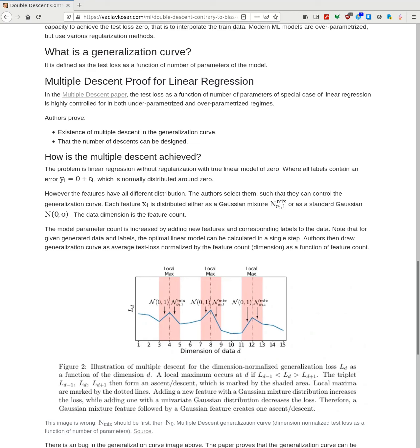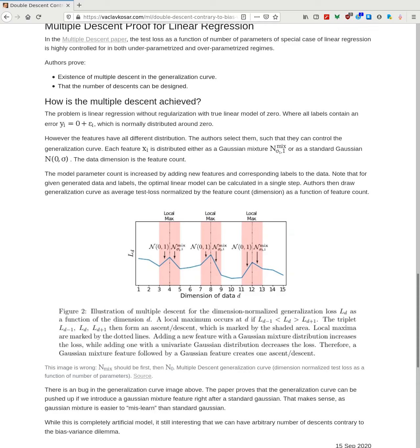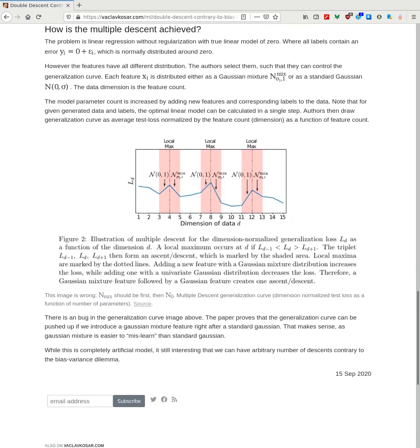What is generalization curve? That is defined as a test loss as a function of a number of parameters. There's this paper multiple descent proof for linear regression, which shows that they can control the generalization curve exactly and they can achieve multiple descent and achieve multiple minima. And how do they do this? So again, they use linear regression without regularization, but in this case they use true linear model of zero. So the labels don't depend on the input samples at all. How they control the distribution is that so they one step after another, they expose new features to the linear regression.